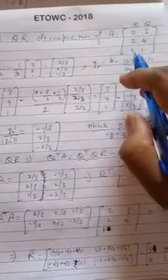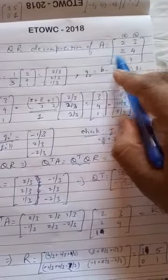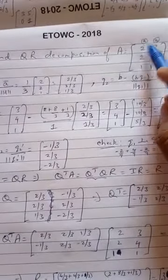So let's see what's the question which is given to us. We have been given a matrix A, which is 2, 2, 1 and 3, 4, 1. And I've denoted the columns as A and B.